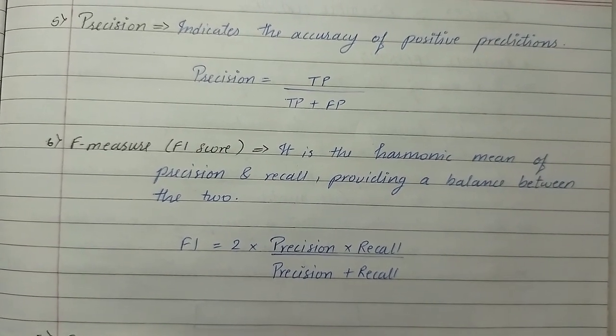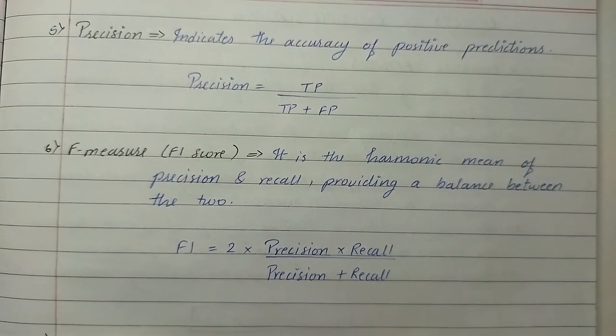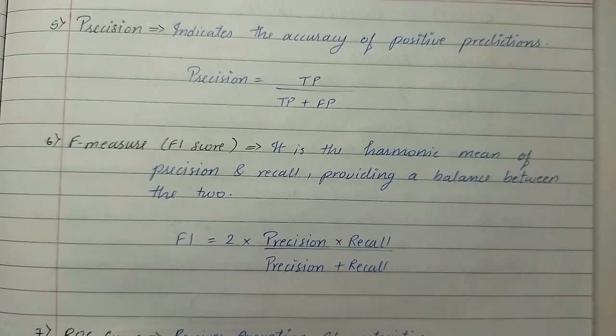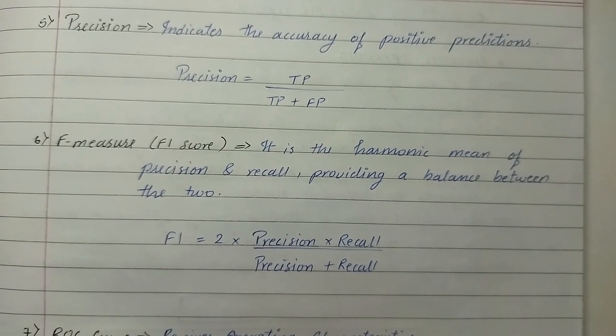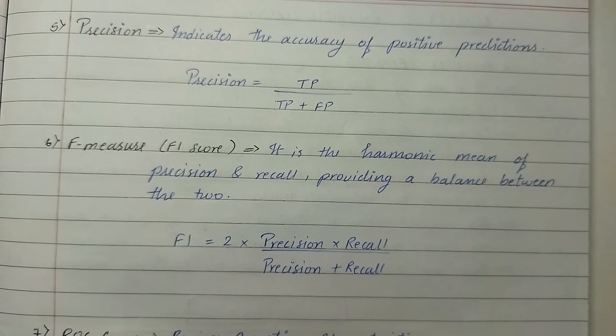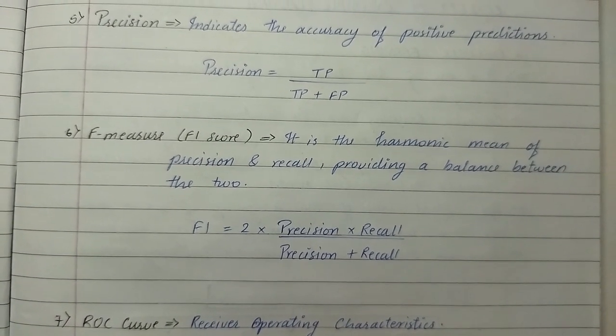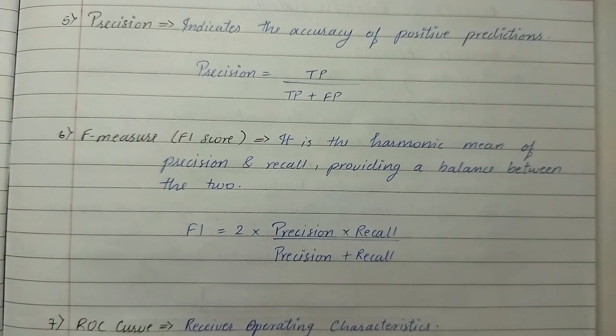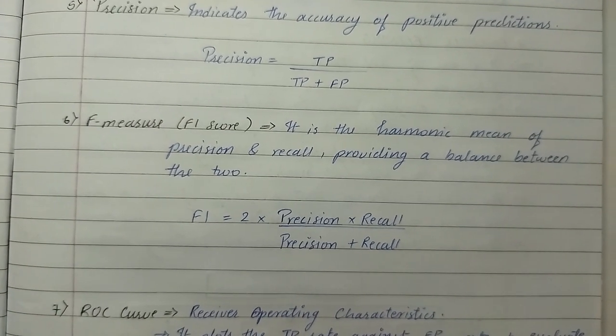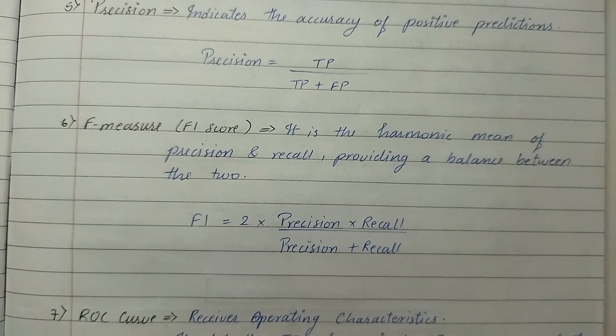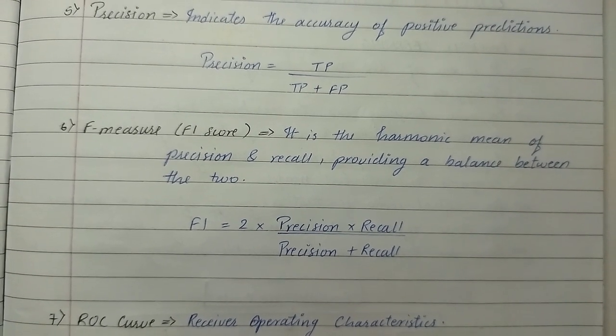The sixth performance matrix is F1 score or F measure. It is the harmonic mean of precision and recall, providing a balance between the two. The formula for F1 score is 2 times precision times recall upon precision plus recall.